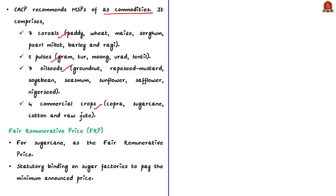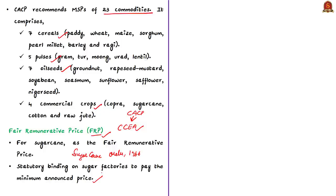We also said we would discuss FRP or fair and remunerative price. This FRP is related to sugarcane. The concept of statutory minimum price was replaced with the fair and remunerative price for sugarcane, which is determined under the Sugarcane Order of 1966. Similar to MSP, FRP is also fixed by the Cabinet Committee on Economic Affairs based on recommendations of the CACP. Importantly, this fair and remunerative price is statutorily binding on sugar factories, making transactions at prices lower than the FRP illegal.